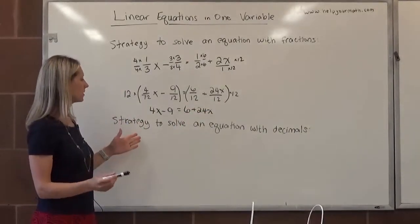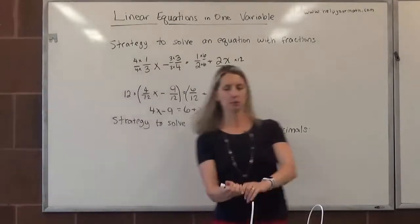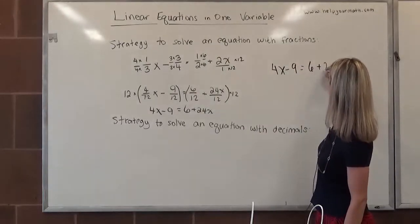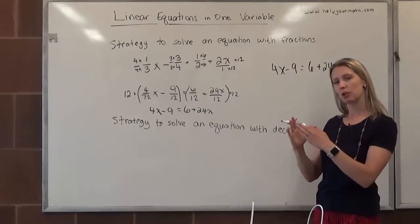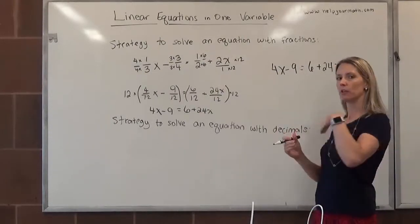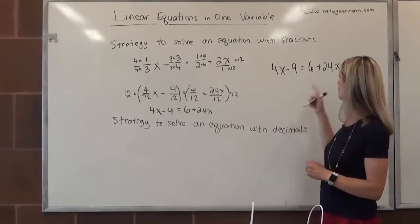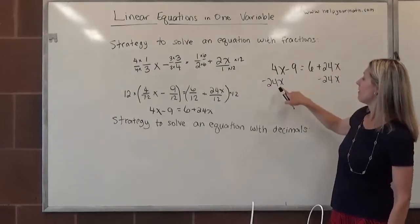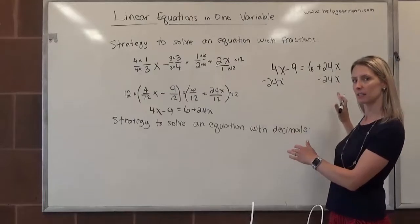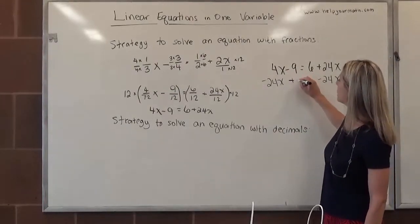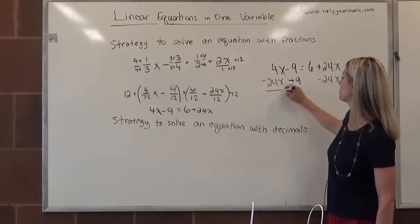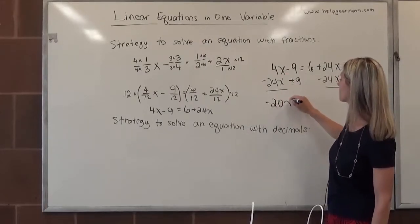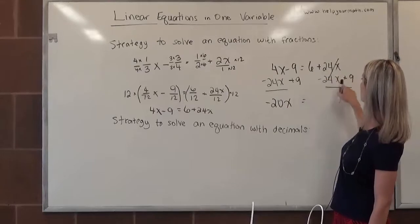From here, we can use inverse operations to determine the value of x. So we have 4x minus 9 equals 6 plus 24x. I might want to get all of my x terms together on one side and all the constant terms together on the other side. If the variable has to be on the left-hand side, that means we're going to subtract 24x from both sides. At the same time, to undo minus 9, I would add 9 to both sides. Here, 4x minus 24x is negative 20x, and 6 plus 9 is 15.